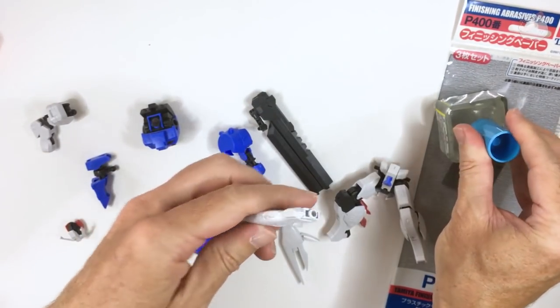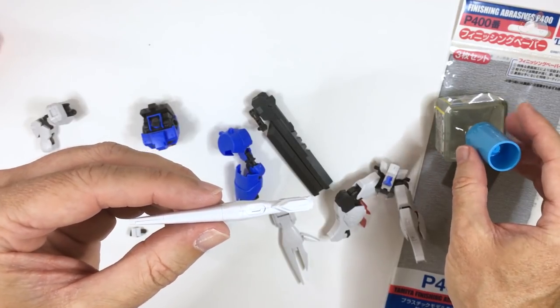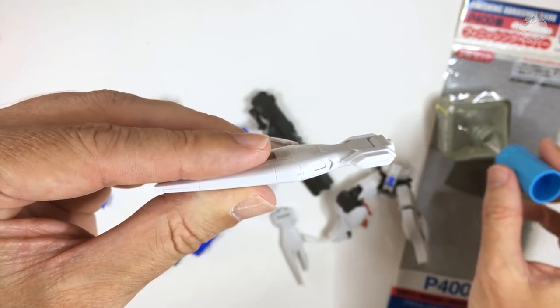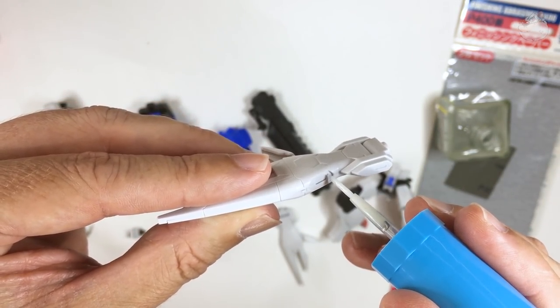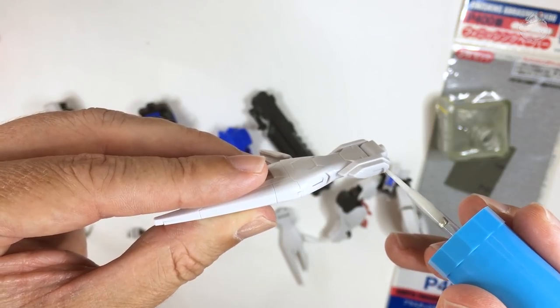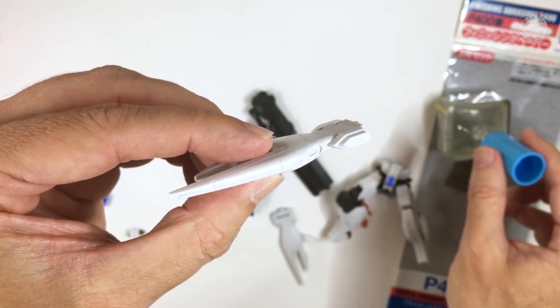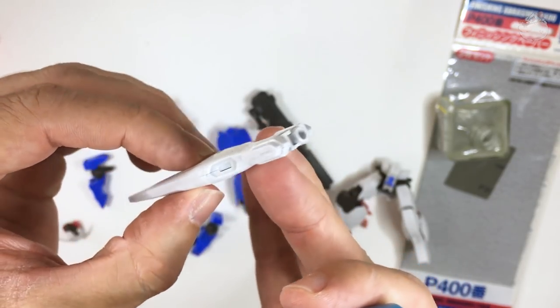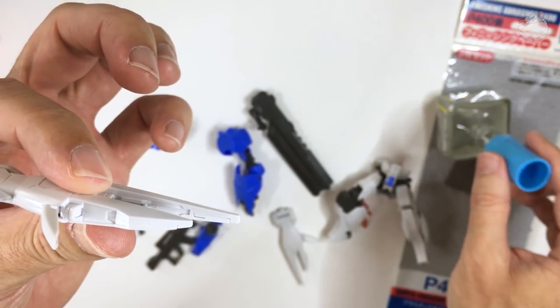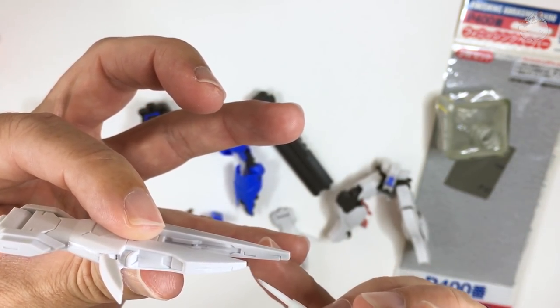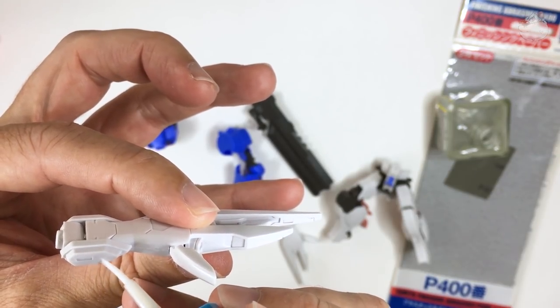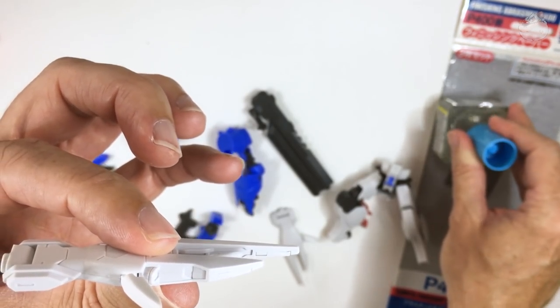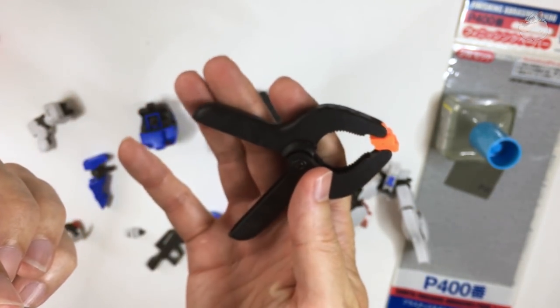I'm going to use some of this Gunze Extra Thin Cement to seal up some of the parts. Now you can see, I'm getting close here, that the HG kits, the quality is still very good, they squeeze together very nicely but there'll still be a couple of little seams. There's a couple of little places where there's a gap in between the parts. And this super thin glue is really easy. You just drop it in over the top, it runs into those little gaps there for you and you press it, squeeze it together. Most of the time, like 90% of the time, that will work.